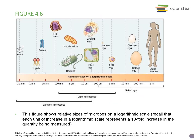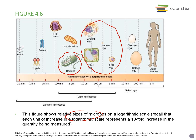Looking at the relative sizes of different microbes and structures, prokaryotes like bacteria are about 10 to 100 times smaller than eukaryotic cells or organisms. Bacteria diameters really range from around 0.1 to 5 micrometers, which is 10 to 100 times smaller than most of our eukaryotic cells.